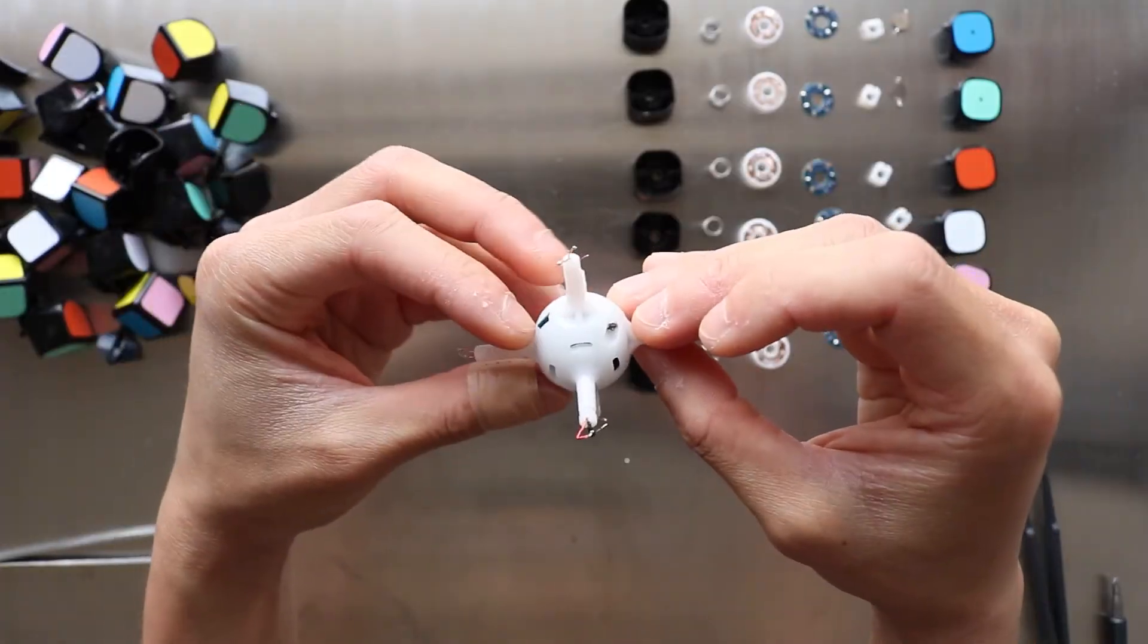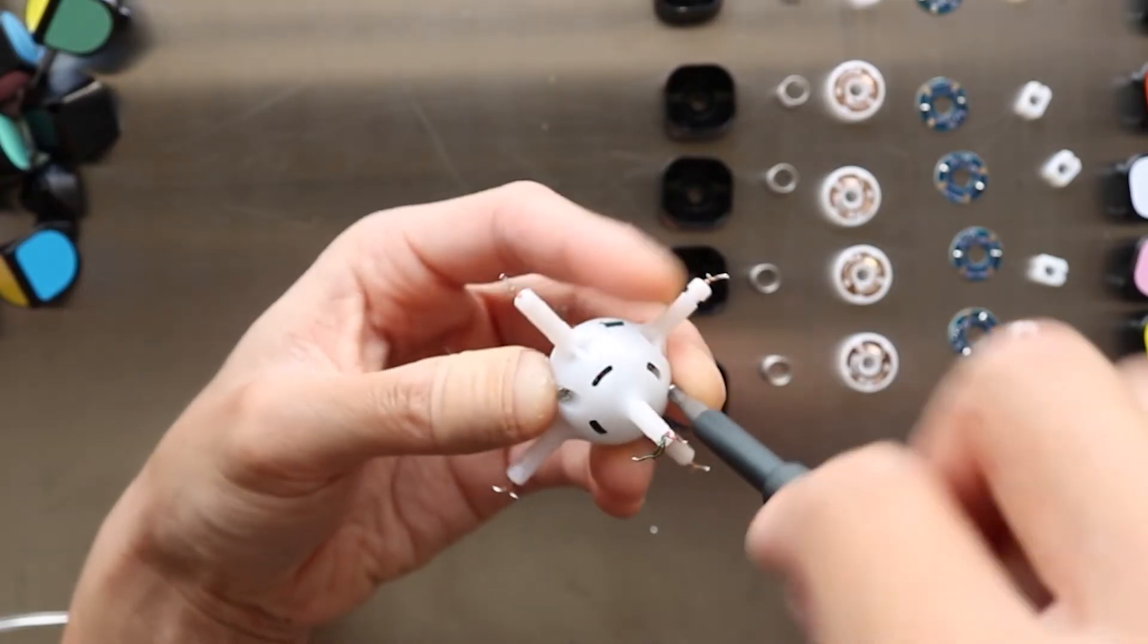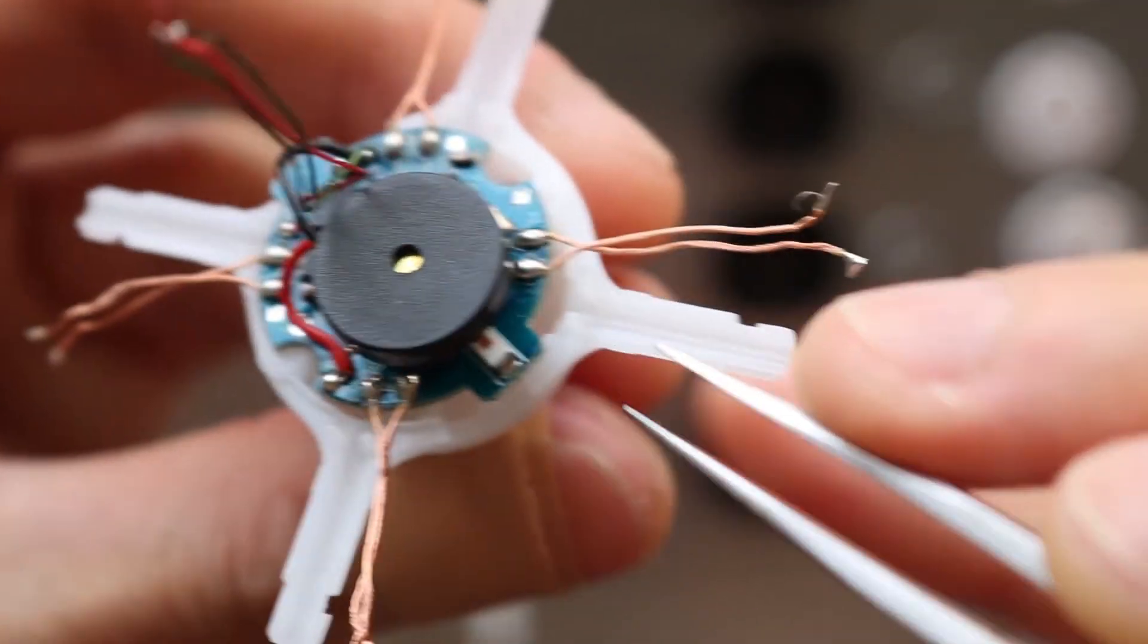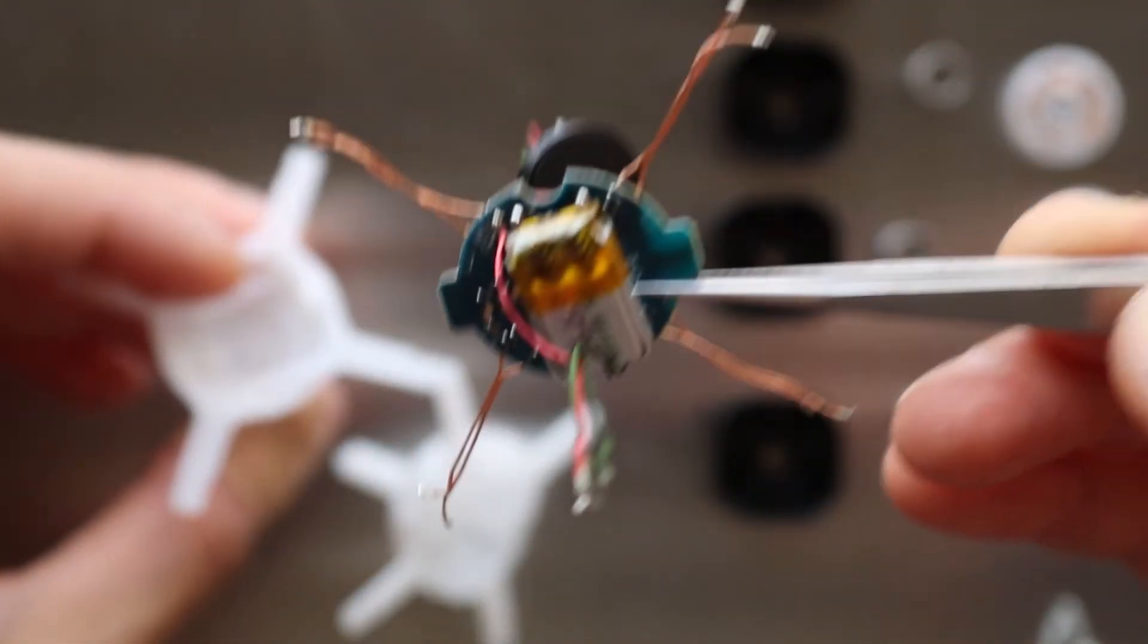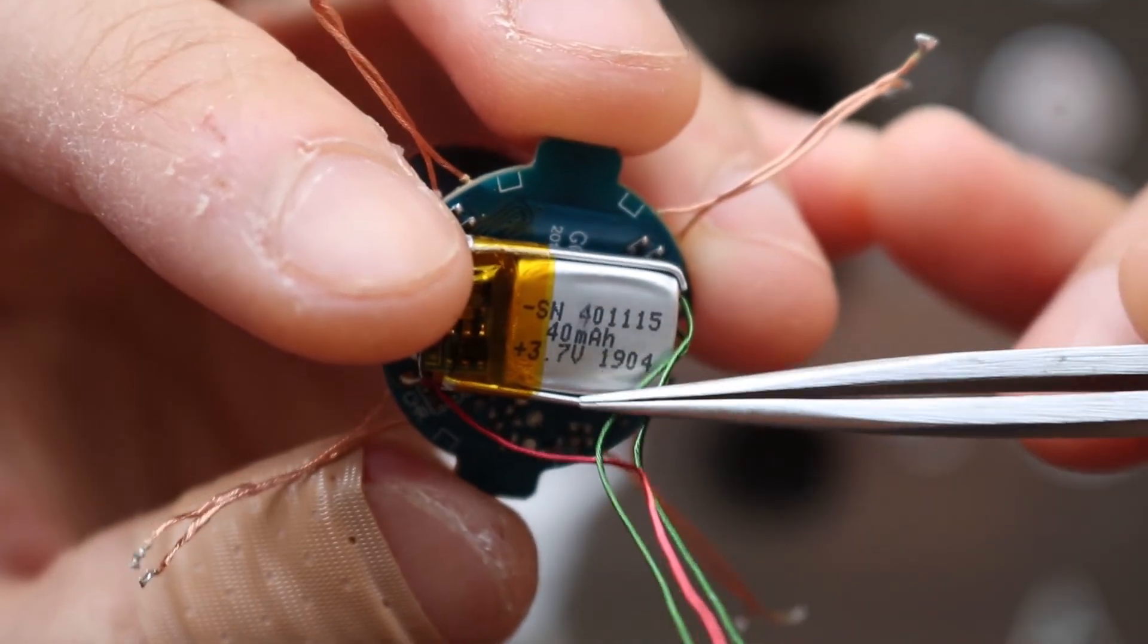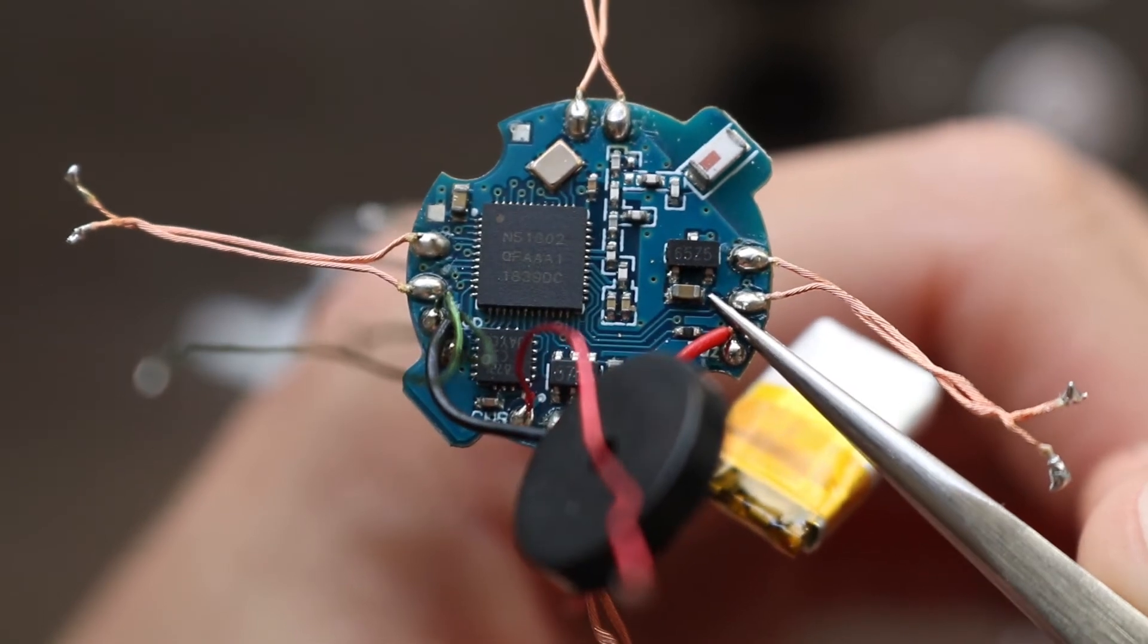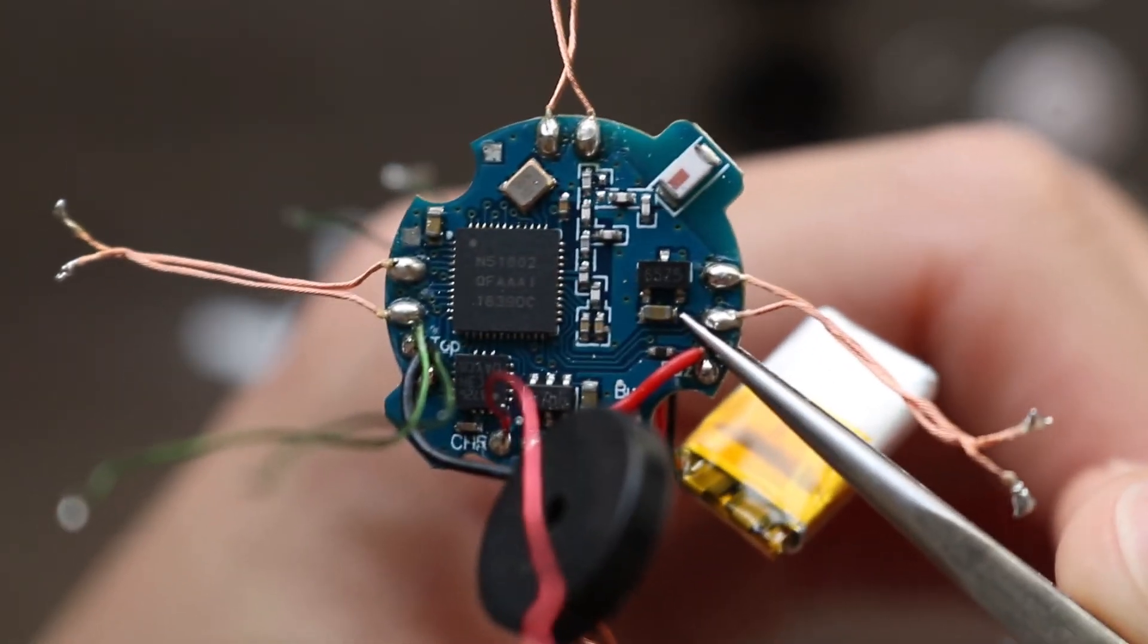The housings are made of what feels like POM and the two halves clamp the main PCB in place. There is a buzzer on one side and a 40 milliamp hour lithium-ion battery on the other side. It must have been quite labor intensive to build this up because there are 18 wires soldered onto this PCB alone.